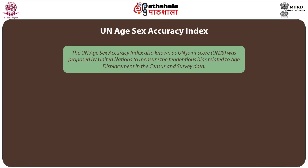Let us examine what the United Nations age accuracy index is all about. The UN age-sex accuracy index, also known as UN Joint Score (UNJS), was proposed by the United Nations in 1952 to measure the bias related to age displacement in census and survey data.